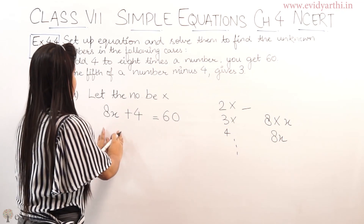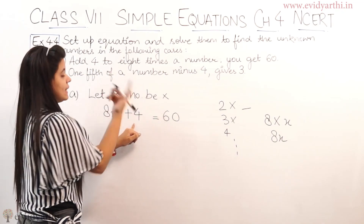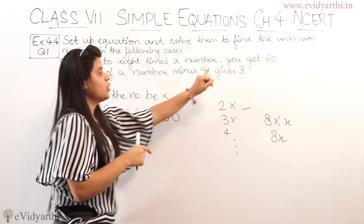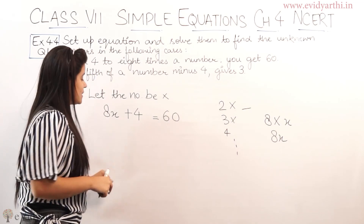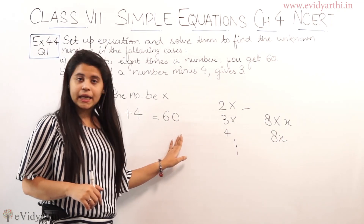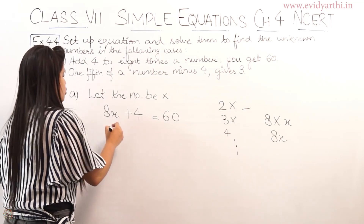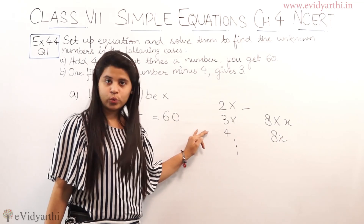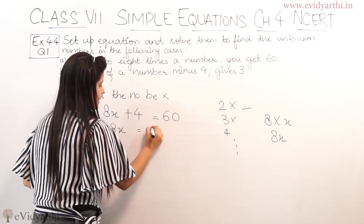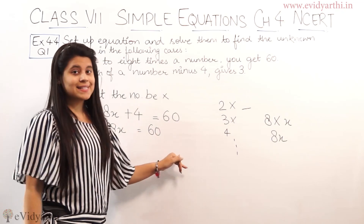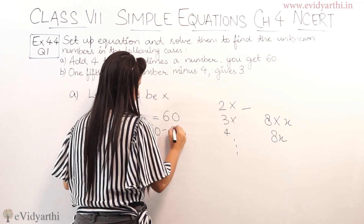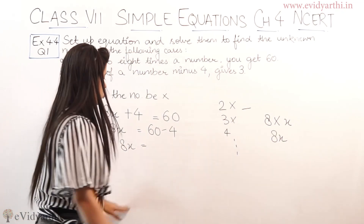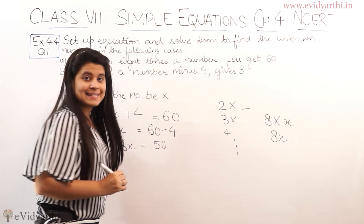Samajh mein aaya? Let's check: add 4 — we added 4 — to 8 times a number, you get 60 as the answer. Now we have the equation and we have to solve it. So 8x + 4 = 60. We send plus 4 to the other side, it becomes minus 4. So 8x = 60 − 4, which is 56.